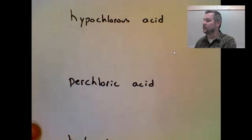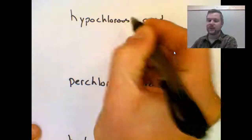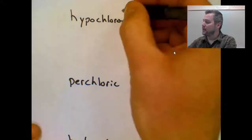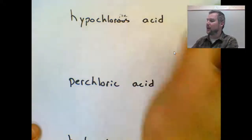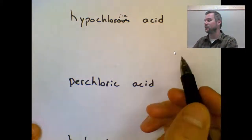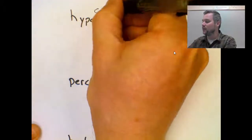Hypochlorous acid. So on these, you want to drop the suffix. -ous came from -ite, which means that the anion for this acid is hypochlorite, which is just ClO minus one.